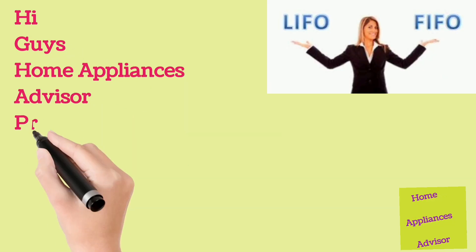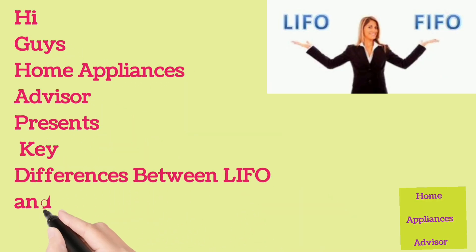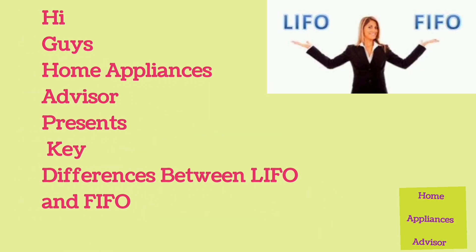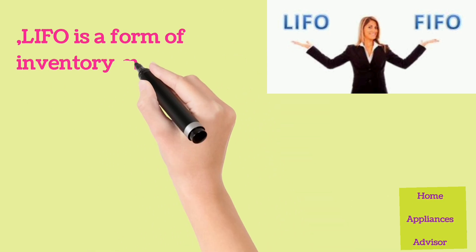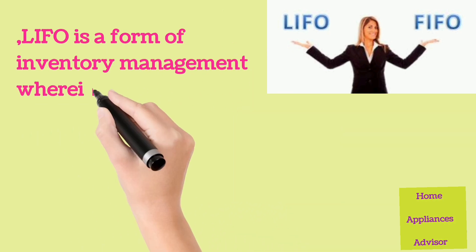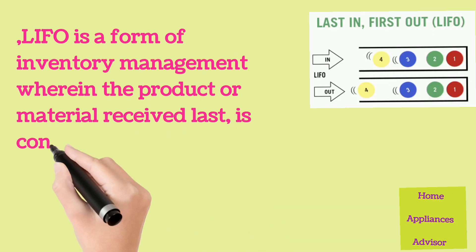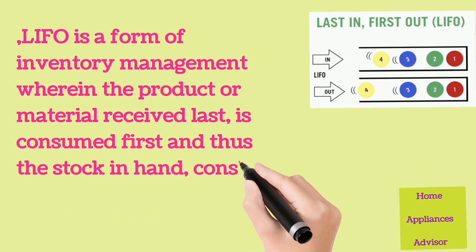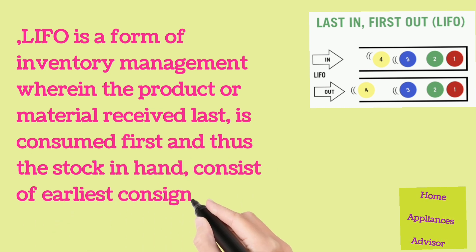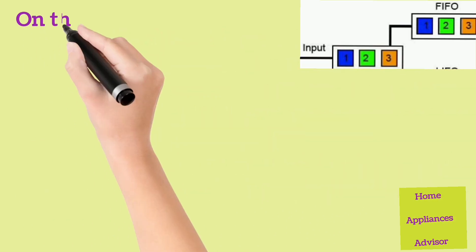Hi guys, Home Appliances Advisor presents key differences between LIFO and FIFO. LIFO is a form of inventory management wherein the product or material received last is consumed first, and thus the stock in hand consists of the earliest consignment.